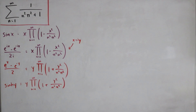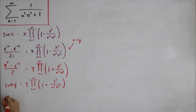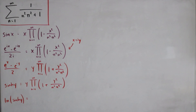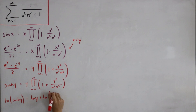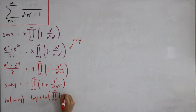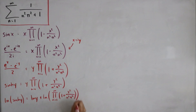Now, by continuity, let's take the natural log of both sides. The natural log of sinh(y) equals the natural log of y plus the natural log of the infinite product from n equals 1 to infinity of (1 plus y squared divided by n squared pi squared).